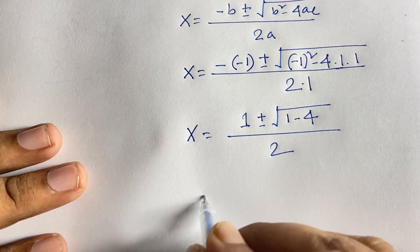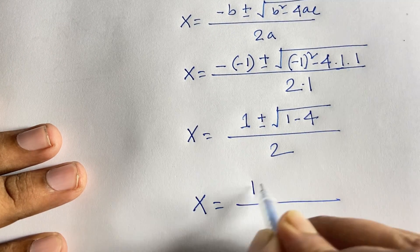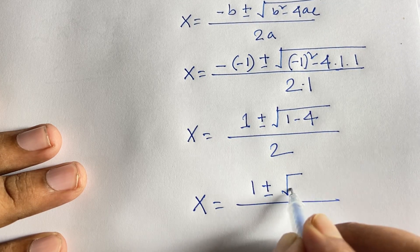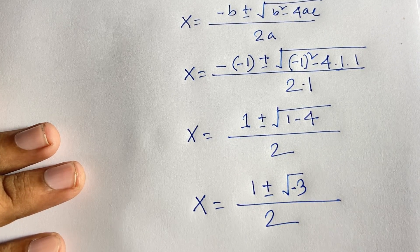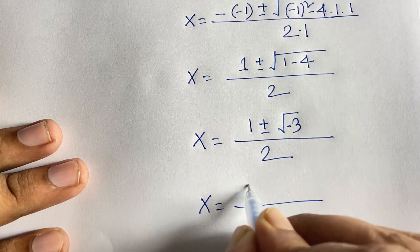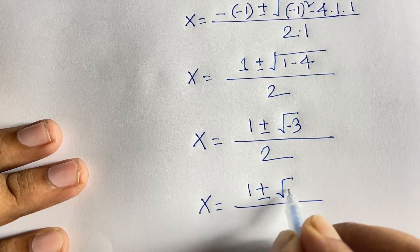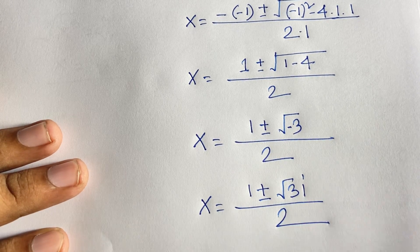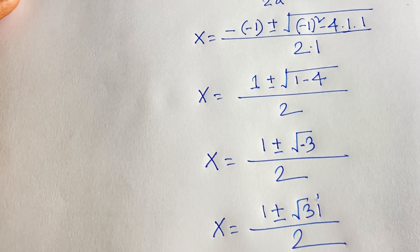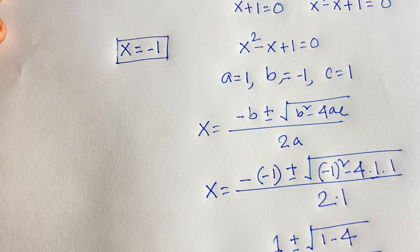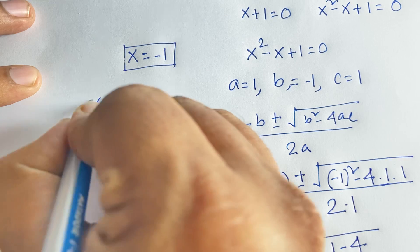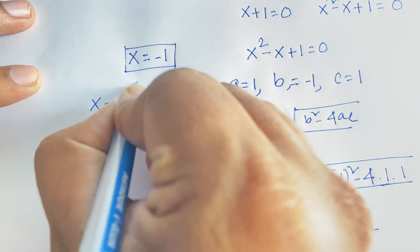This simplifies to x equals 1 plus or minus square root of (1 minus 4) over 2, which is x equals 1 plus or minus square root of minus 3 over 2. So the imaginary roots are x equals (1 plus or minus square root 3 times i) over 2. Our real answers are x equals minus 1 and x equals 2 to the power 1 over 3.